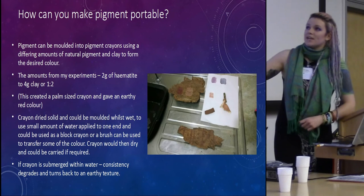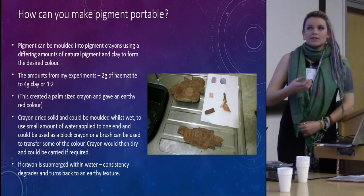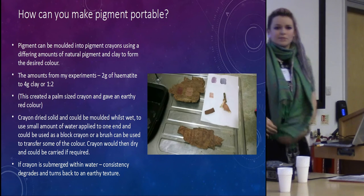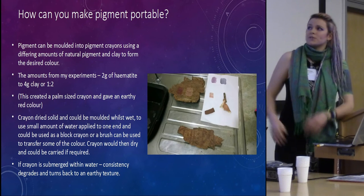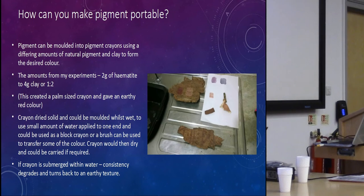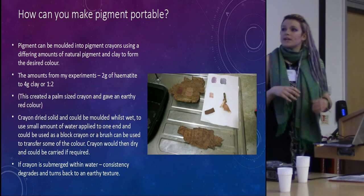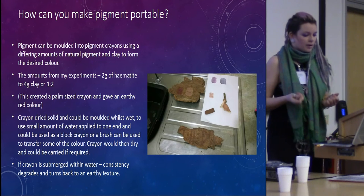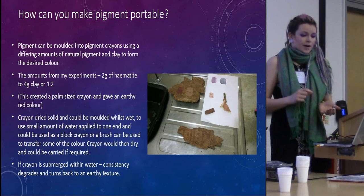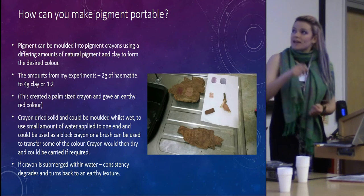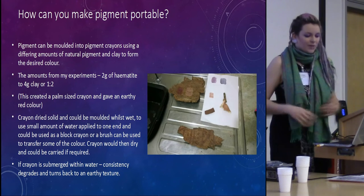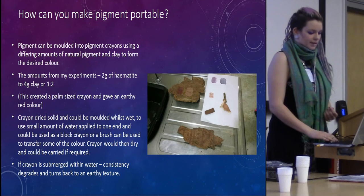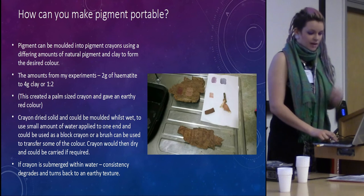I also did a micro-experiment looking at how we can make tools of pigment portable, because you often think making pigment is just this powder. Unless you're storing it in some sort of bark roll or pouch — which would be very messy — you can actually create pigment crayons very easily using clay and hematite: just mix them, shape them, and that becomes a very portable and quite durable artifact. This can then be wetted and used as a natural crayon, used to paint, and then let dry and pocketed away. However, when it's submerged, it completely goes back to the original consistency — turning back to something that wouldn't be visible in the archaeological record.